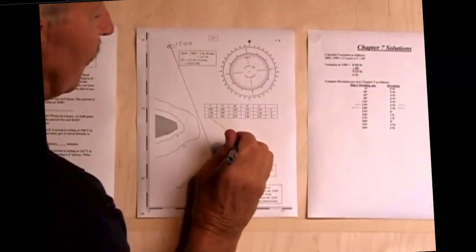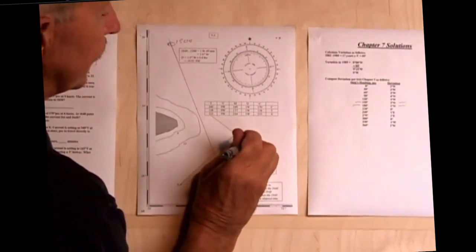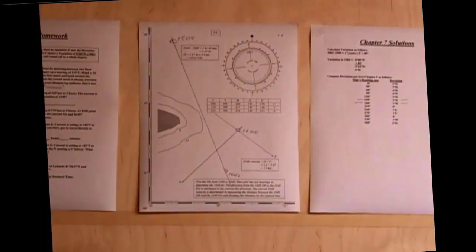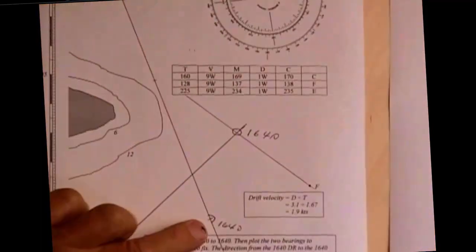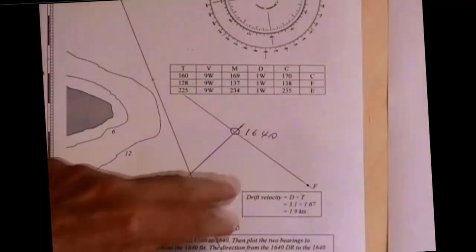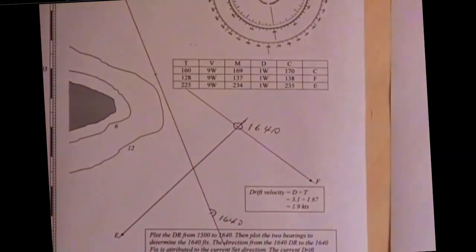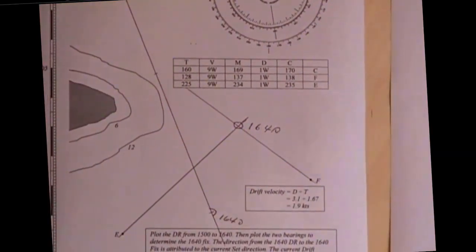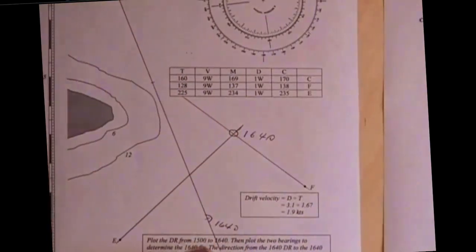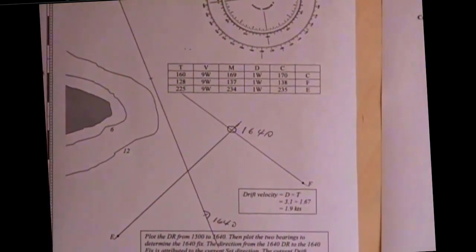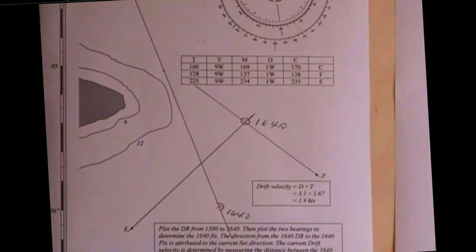What this question says is I'm sailing down here and keeping a DR track. At 1640, I took a bearing on F and E, and I end up with a fix that's nowhere near my DR. Not completely surprising, because the DR is never completely accurate.